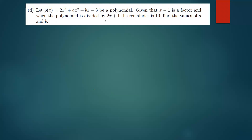This is a simple question. Let p(x) = 2x³ + ax² + bx - 3 be a polynomial. Given that x - 1 is a factor, and when the polynomial is divided by 2x + 1 the remainder is 10, find the values of a and b. This one is simple and shouldn't take much of your time.